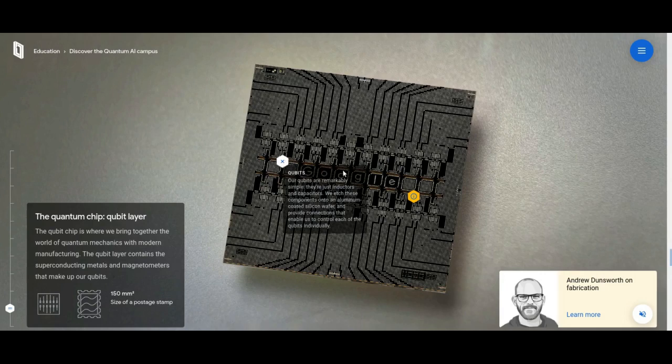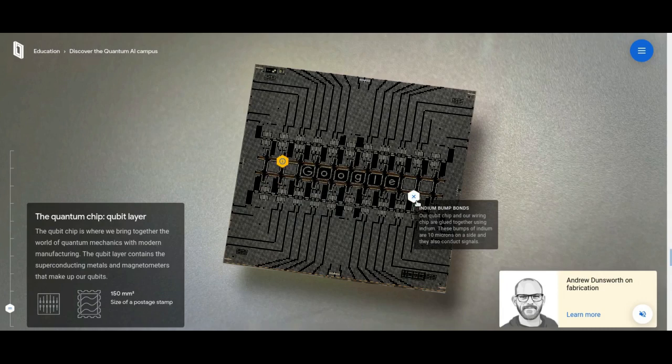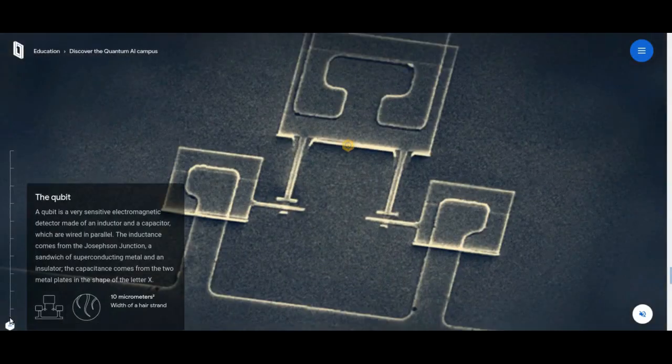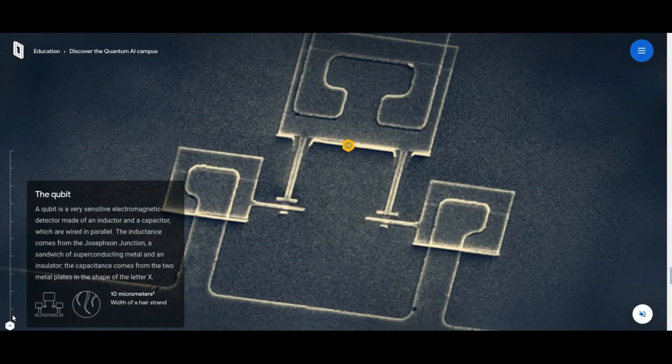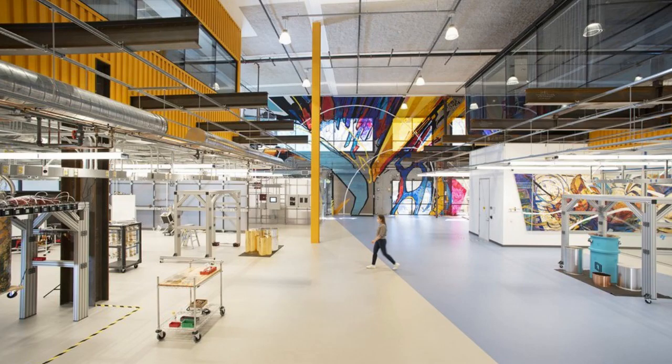Google says that to reach this goal, they are on a journey to build 1 million physical qubits that work in concert inside a room-sized error-corrected quantum computer. That's a big leap from today's modestly-sized systems of fewer than 100 qubits.